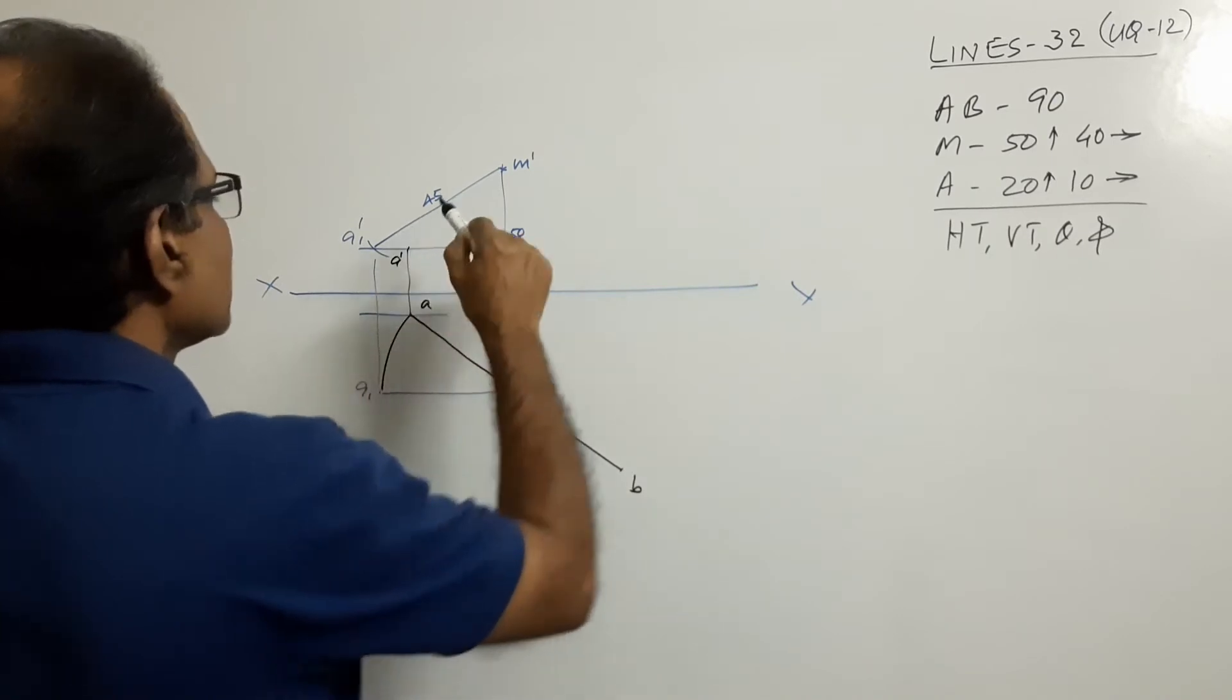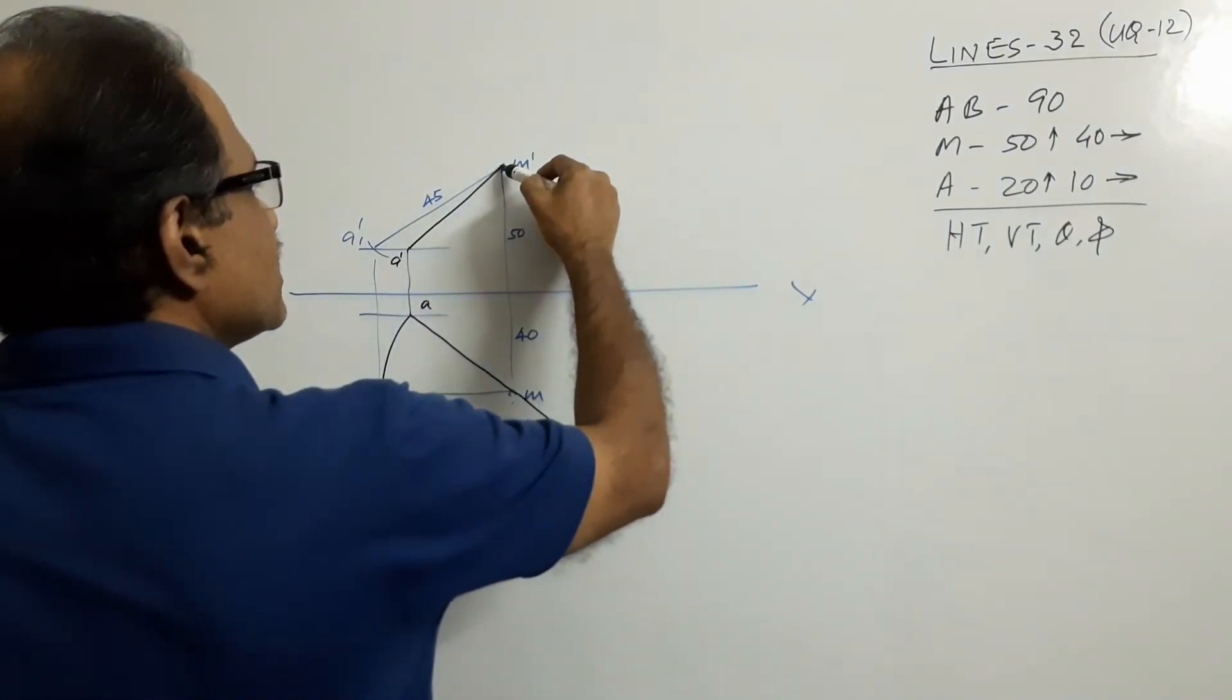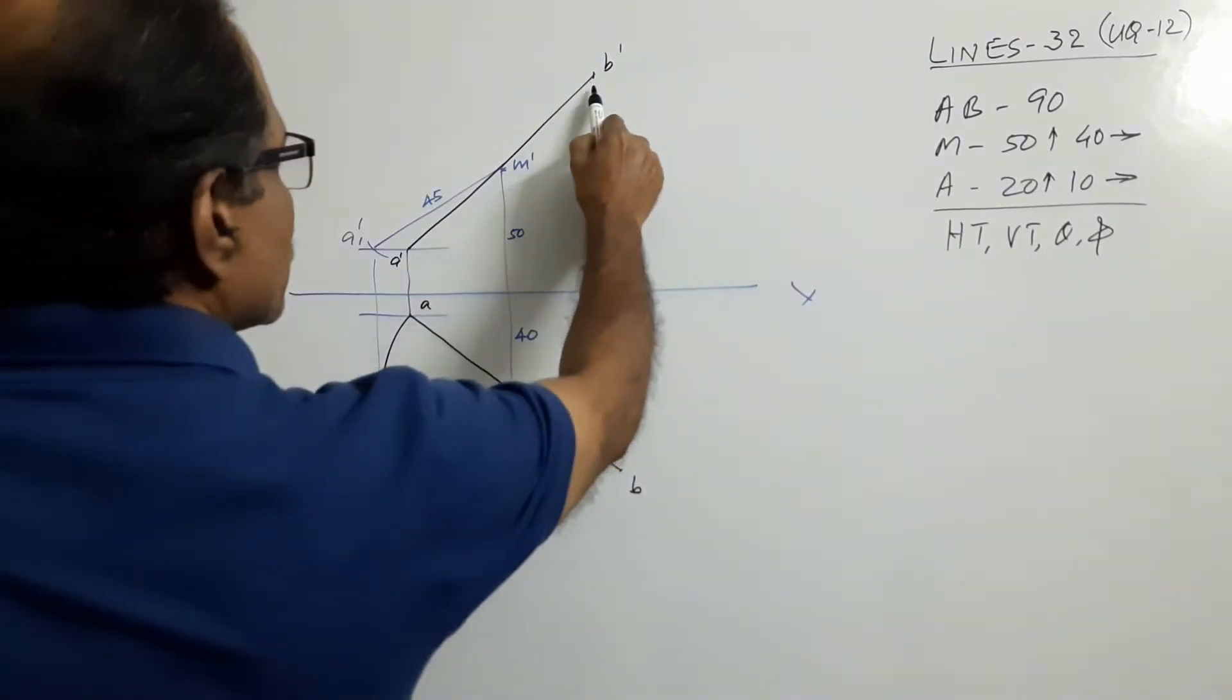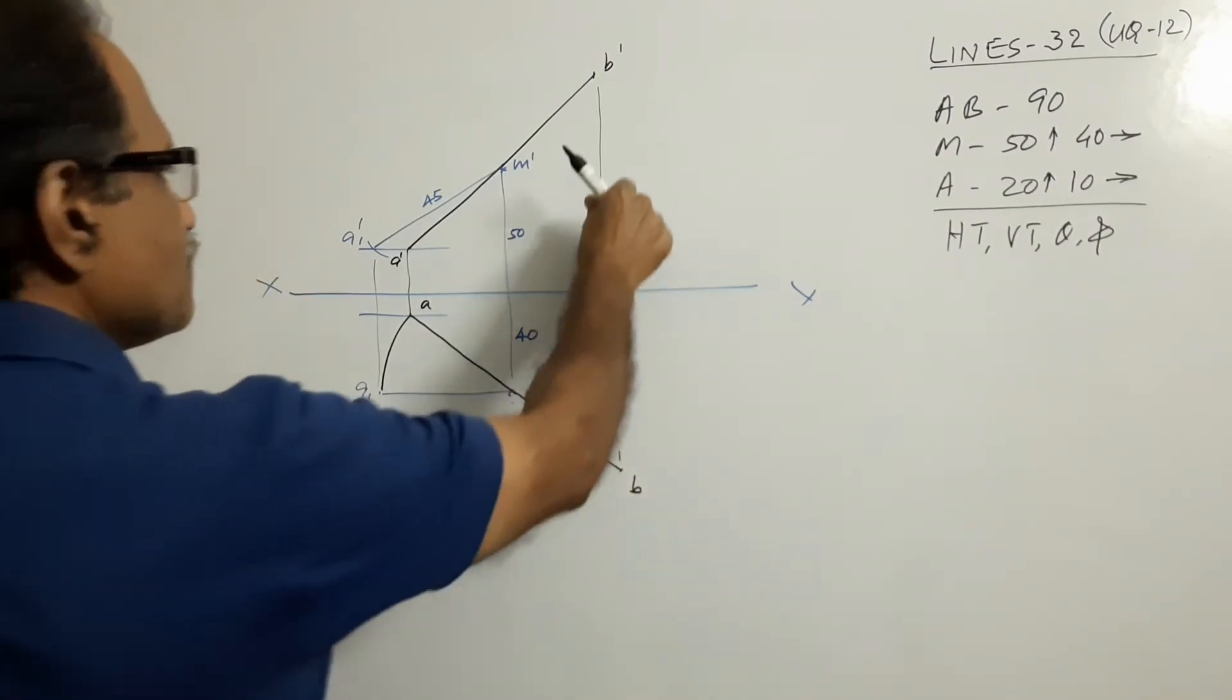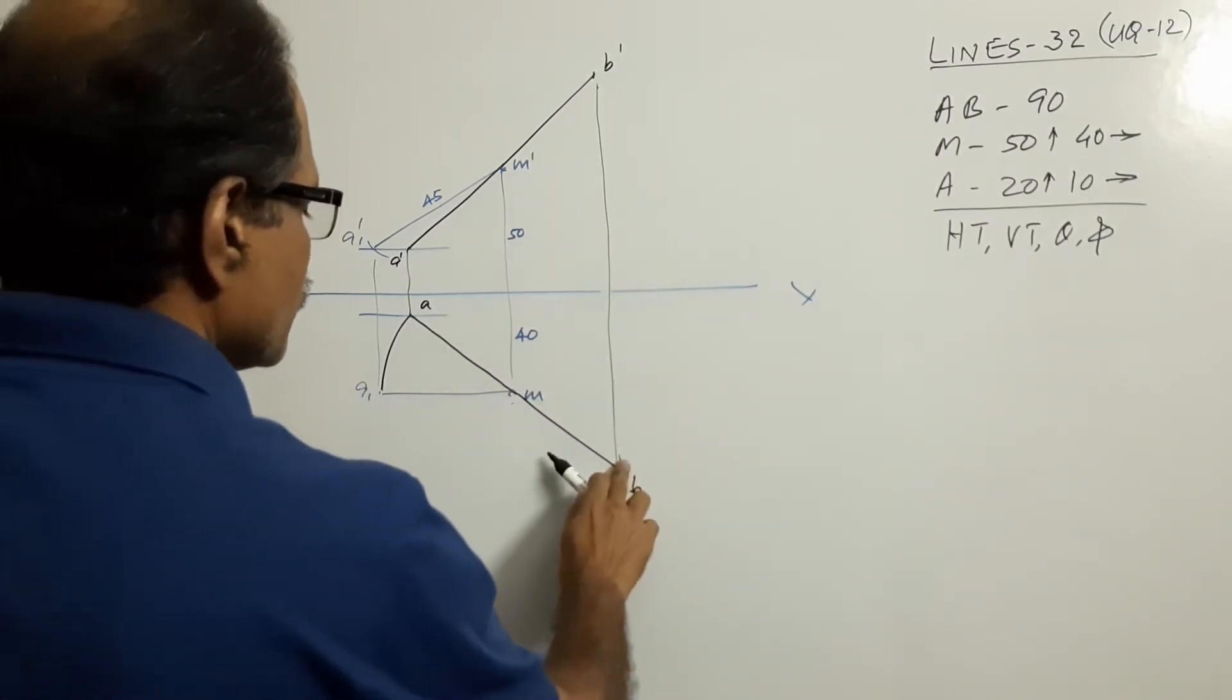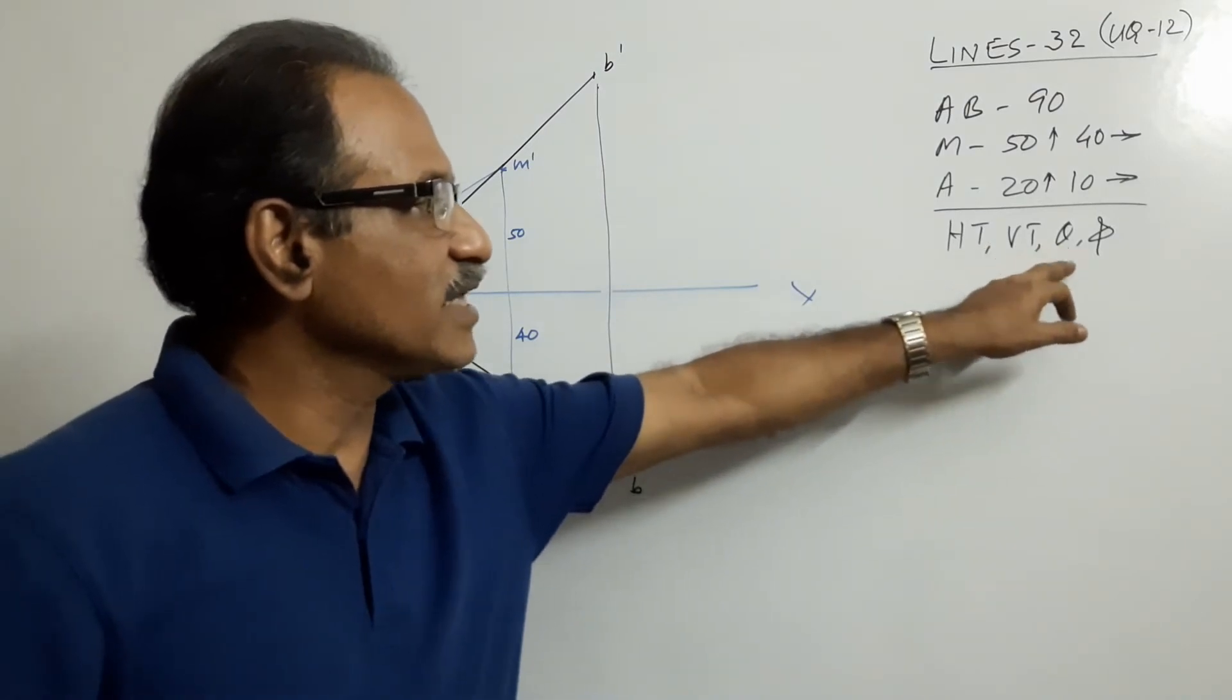A dash M dash A dash is the half of the final elevation. Extend the same distance in the opposite direction. B dash, A dash B dash is the final elevation. A projector through B dash will pass through B. You have got the plan and elevation. You have to find out HT, VT, theta, and phi.